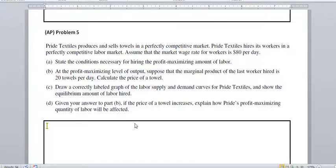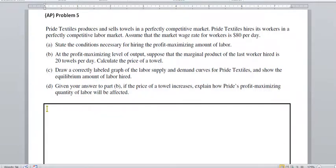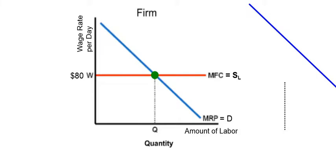Part C: we want to draw a correctly labeled graph of the labor supply and demand curves for the firm — Pride Textiles — and show the equilibrium amount of labor hired. Remember, when we're talking about the wage, the wage is set by the market. So the wage rate is going to be a horizontal line that is also the firm's supply curve for labor. We want to make sure we have the horizontal wage, which is also the marginal factor cost and the supply of labor curve for the firm, and then a downward sloping marginal revenue product curve, which also equals the demand for labor.